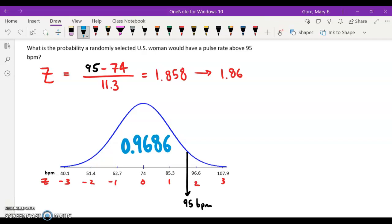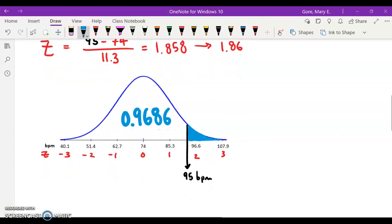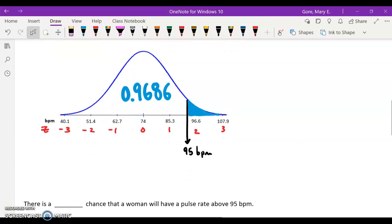Now, what we want, when it said above 95, we want the area, this turquoise area over here, that's kind of the opposite of what it told me. That's our solution, that little area in the tail. How we determine that is we take 1, the entire area under the normal model, and subtract off what the table told us. That gives us the complement, the opposite. That gives me 0.0314.